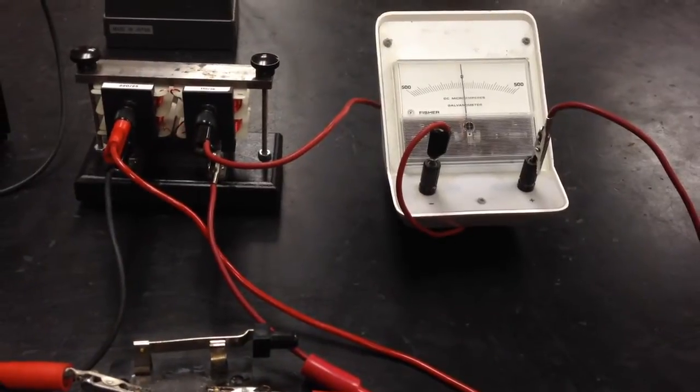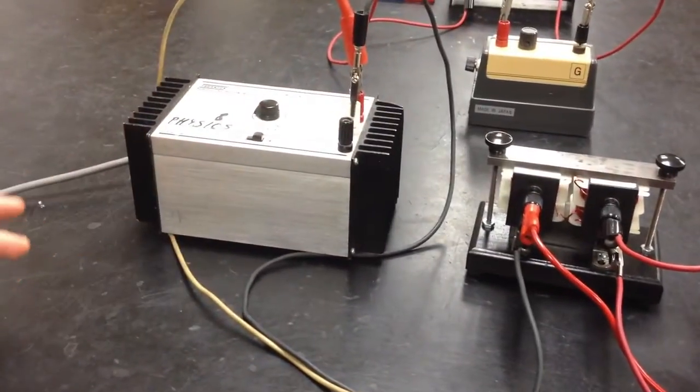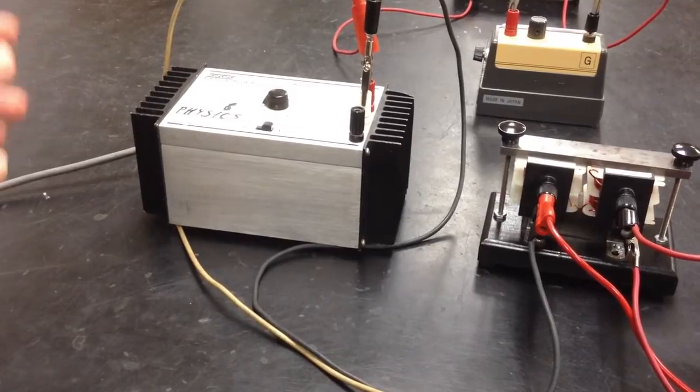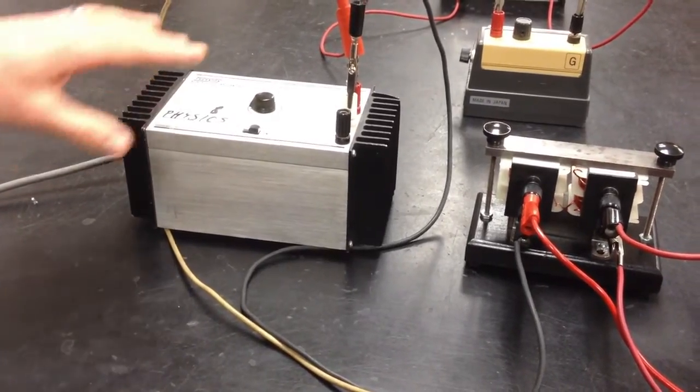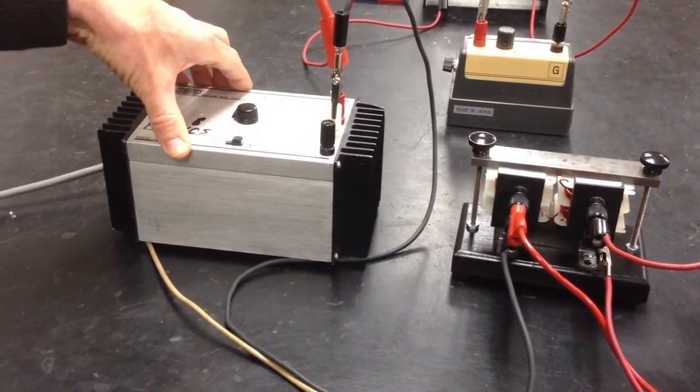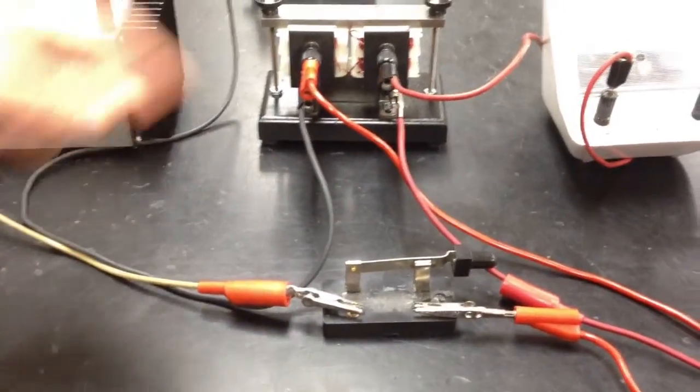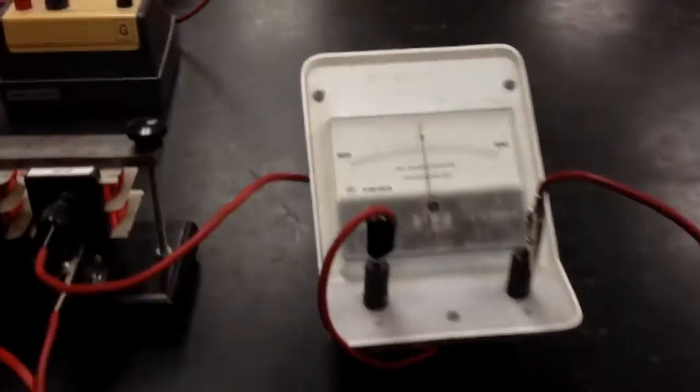Now you may notice that the needle is fluctuating even though the switch is closed. That's because the power supply here is actually not so stable. It does have a slight variation in voltage and therefore it is behaving as if it's going on and off. That's why you see a little bit of fluctuation here.